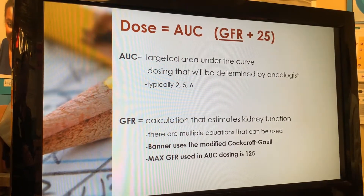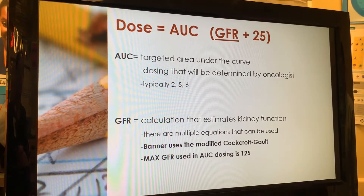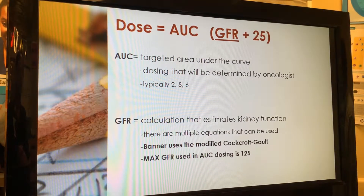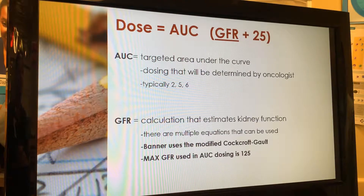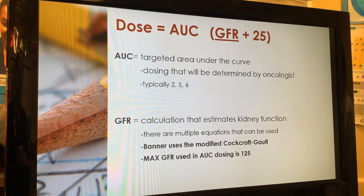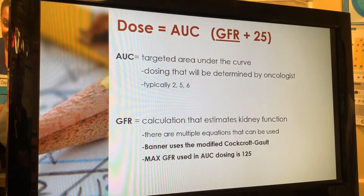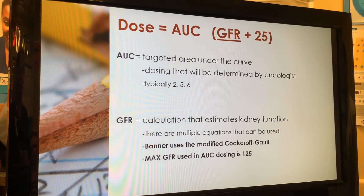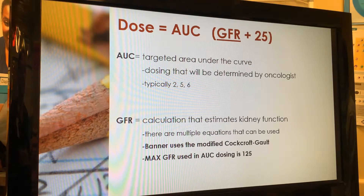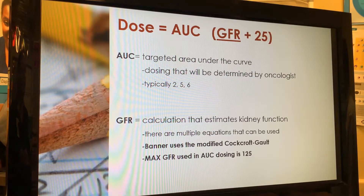There are 10 to 15 to 20 different ways to calculate an estimated kidney function, so as a Banner organization we use the modified Cockcroft-Gault equation. The standard Cockcroft-Gault is common in pharmacy for estimating kidney function, and the modified version accounts for outliers: obese patients and elderly patients who are underweight.